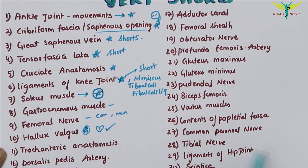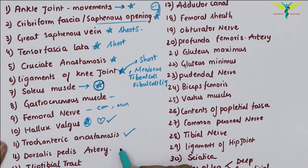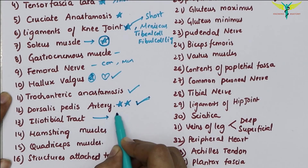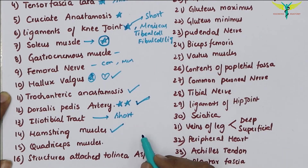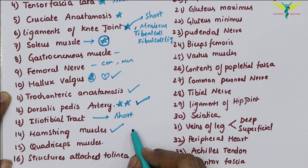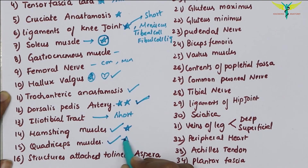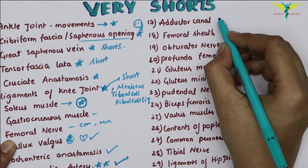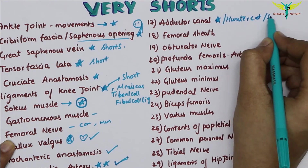The trochanteric anastomosis is also important. The dorsalis pedis artery is very very important. The iliotibial tract is also a short question. The hamstring muscles in very short — name the hamstring muscles with nerve supply, or name the true hamstring muscles. The quadriceps muscle is also important. The structures attached to the linea aspera are very very important.